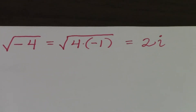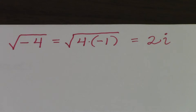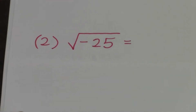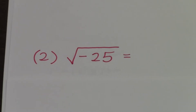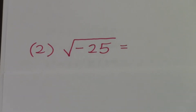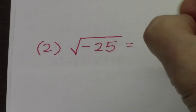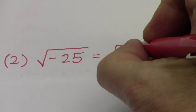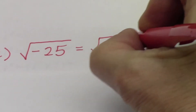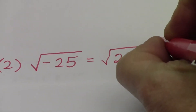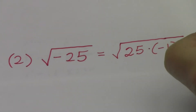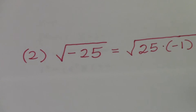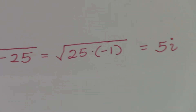Now I have another example I'd like you to try, so pause the video for a couple of seconds and then we'll see if our answers match. I hope you separated it into twenty-five times negative one. The square root of twenty-five is five, the square root of negative one is i, so your answer is 5i.